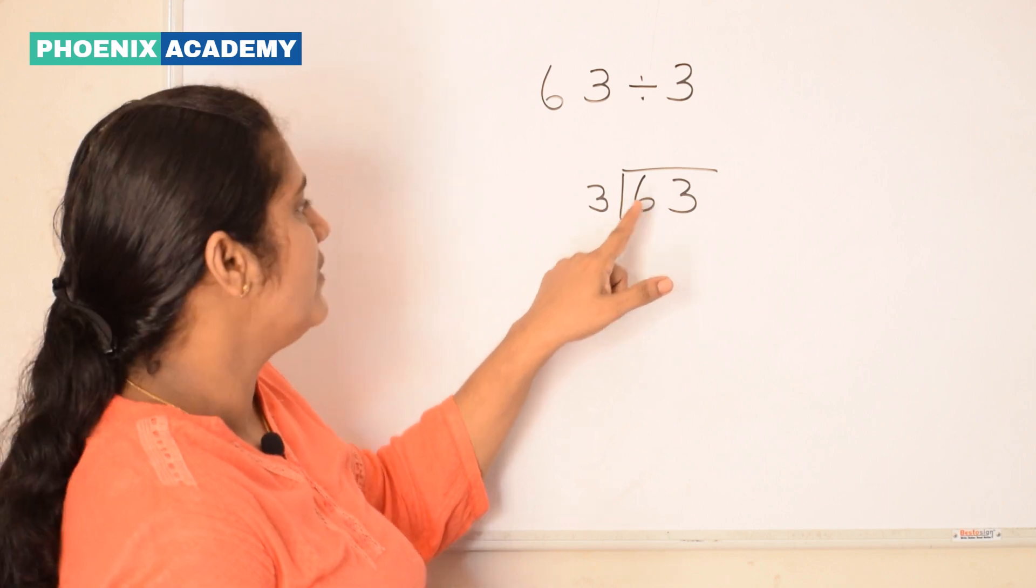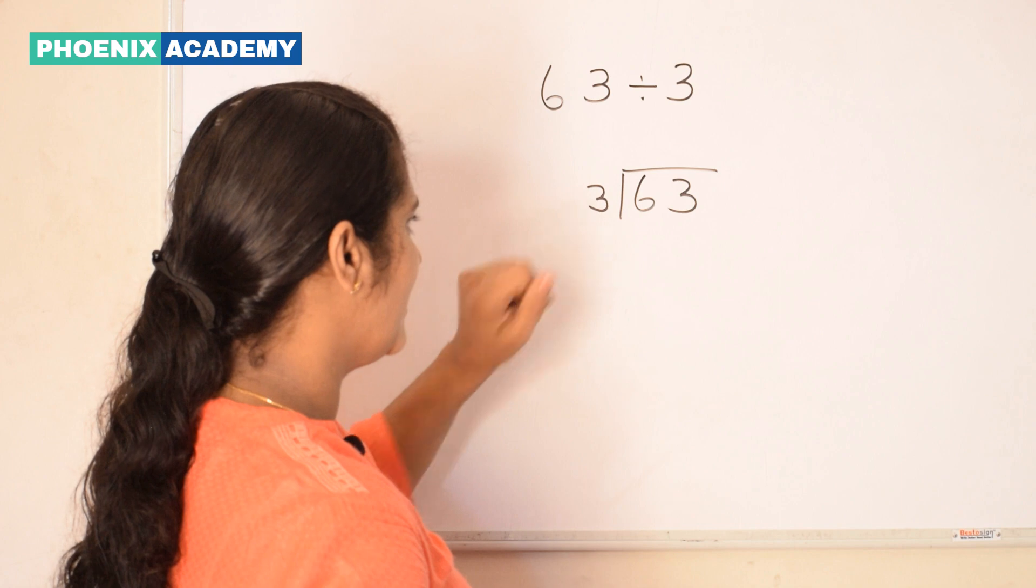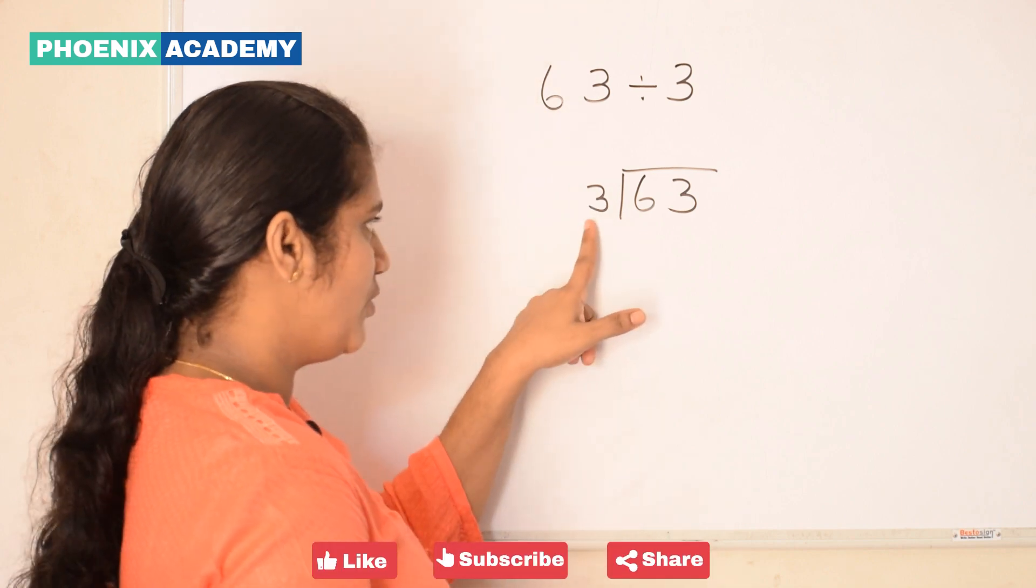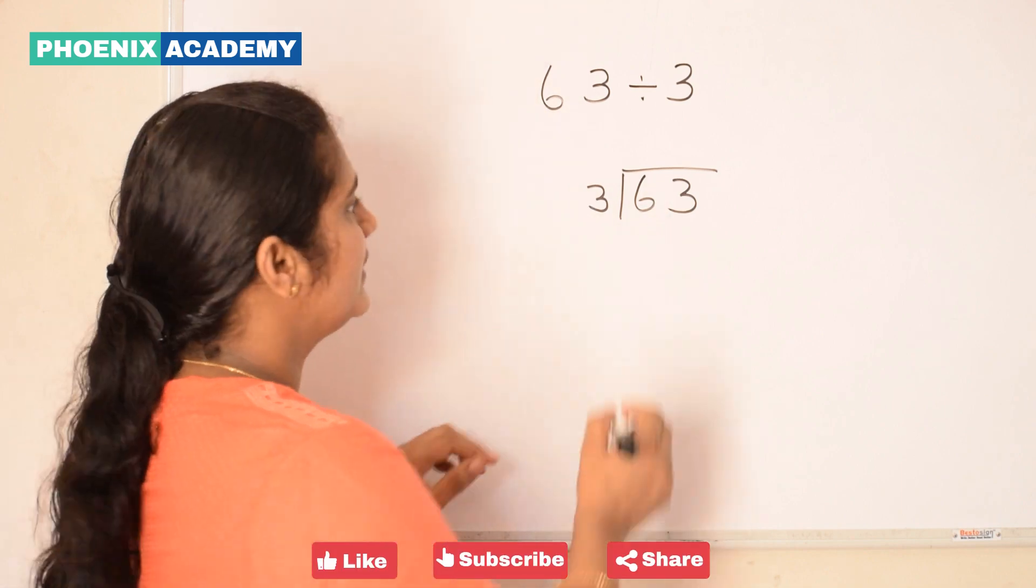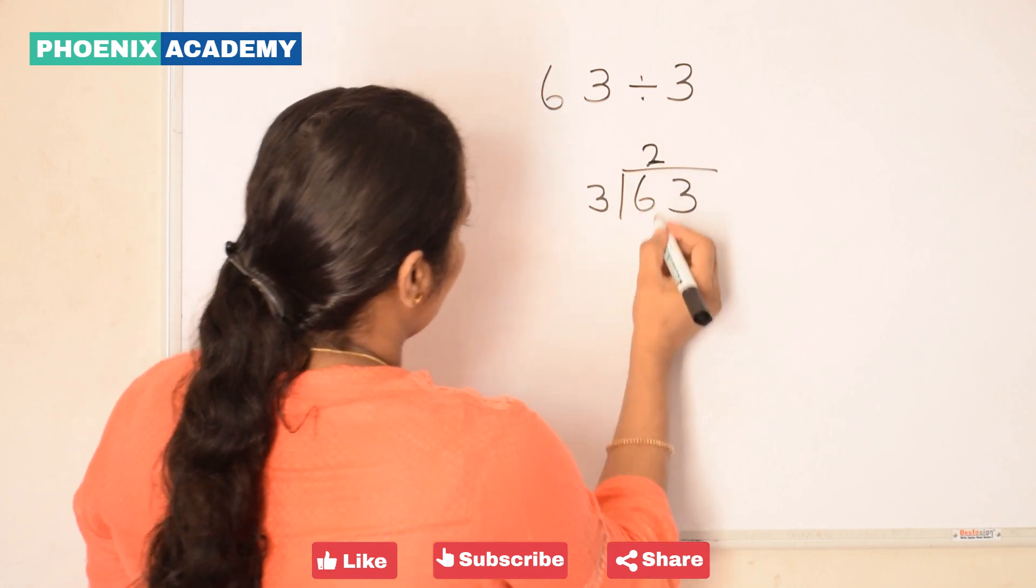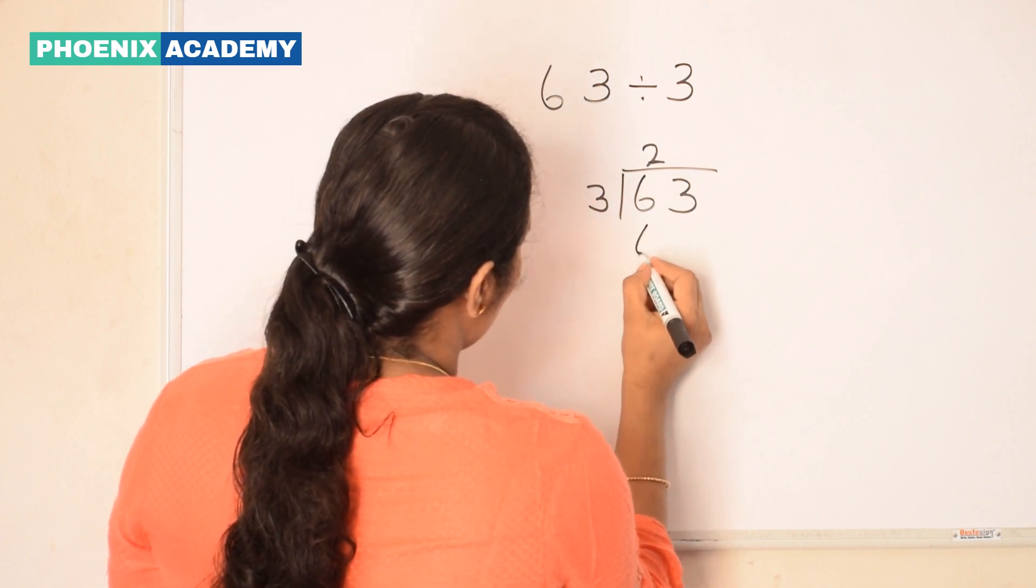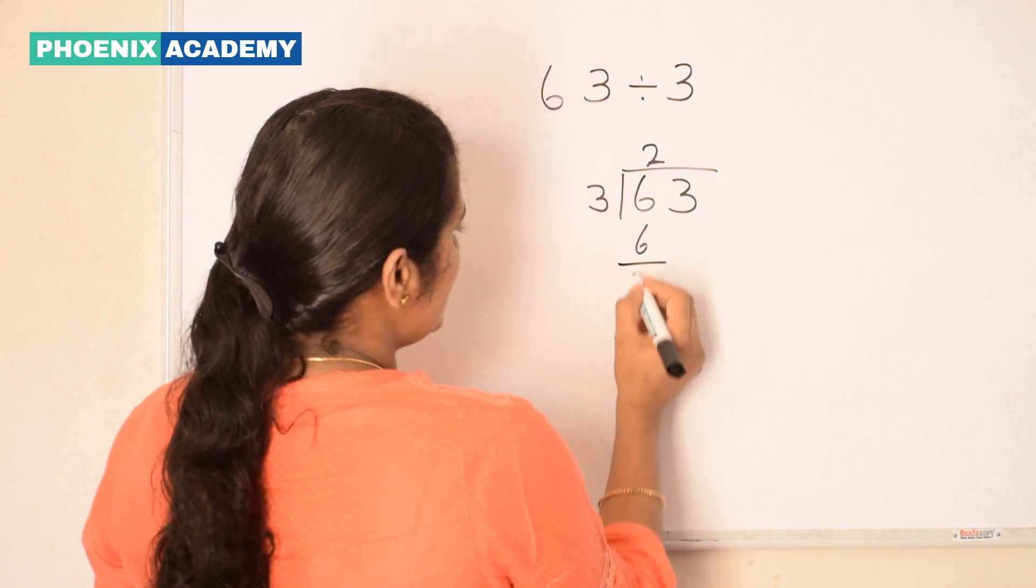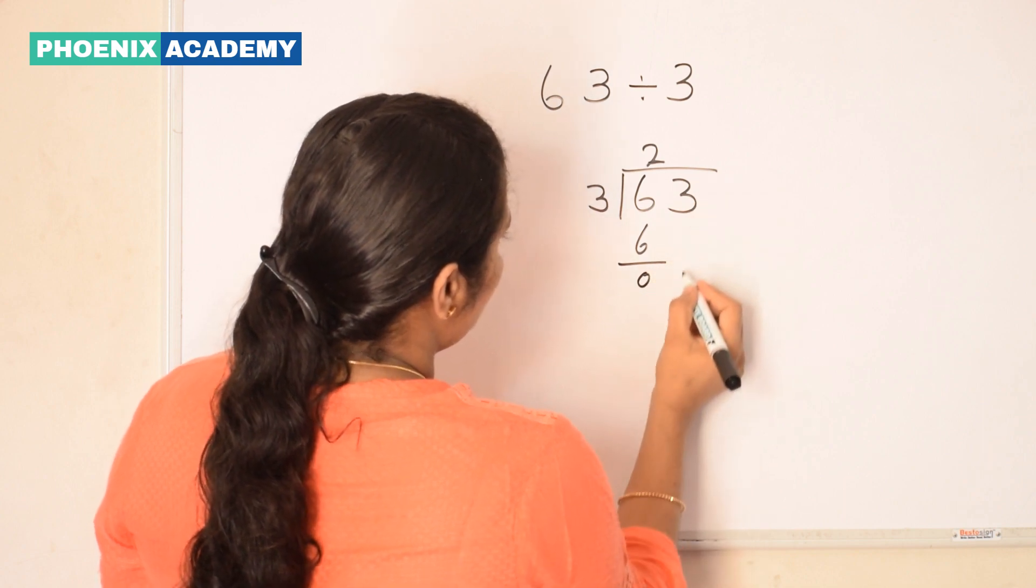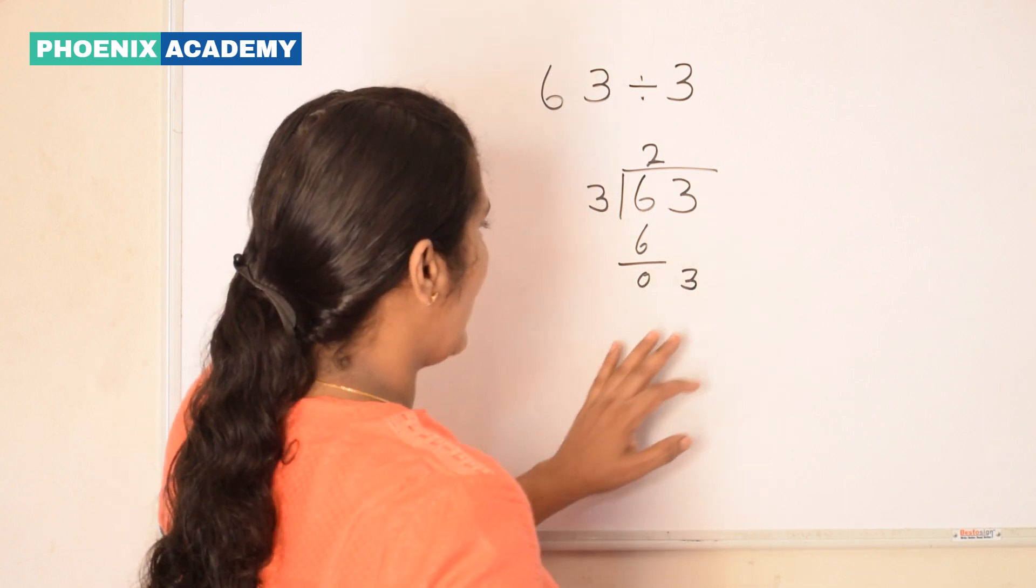So we divide first 6 by 3. 6 divided by 3. We say the table of 3 till you reach 6. 3 twos are 6. 2 we write at quotient's place and 6 we write below the dividend and subtract. Then bring down the value in ones place and divide.